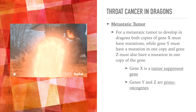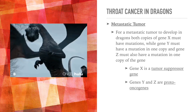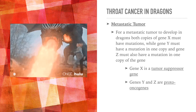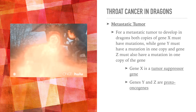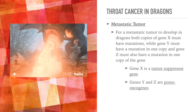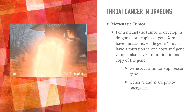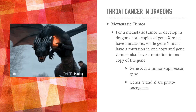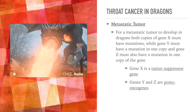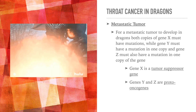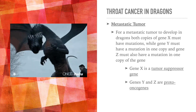Lastly, for a metastatic tumor to develop, both copies of gene X must have a mutation, gene Y must have a mutation in one copy, and gene Z must also have a mutation in one copy. This means that gene Z must also be a proto-oncogene. If one copy is mutated, it generates an oncogene, which leads to uncontrolled cell growth, resulting in a metastatic tumor.